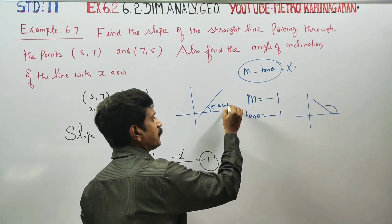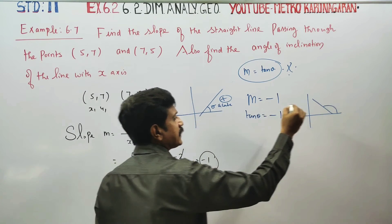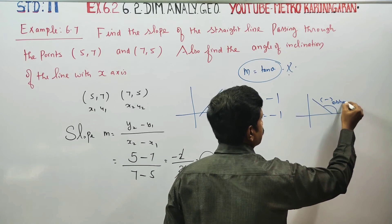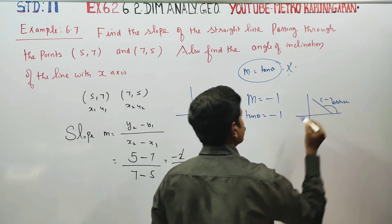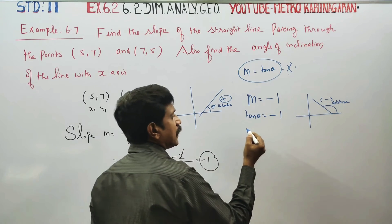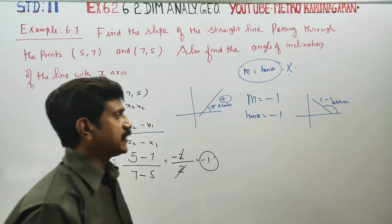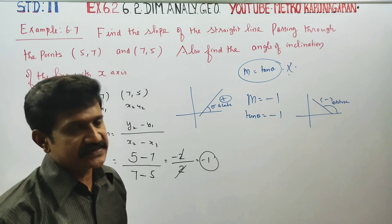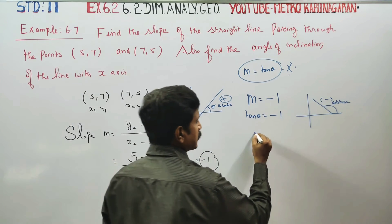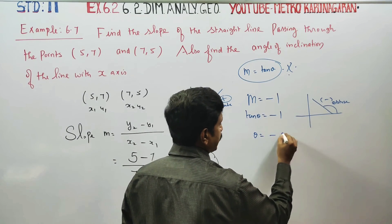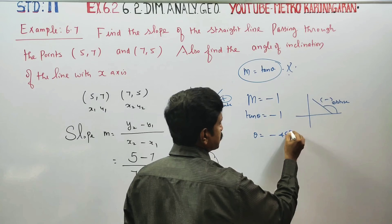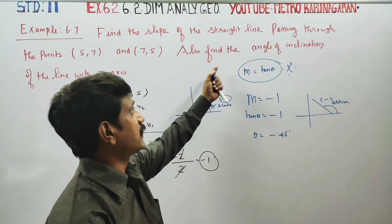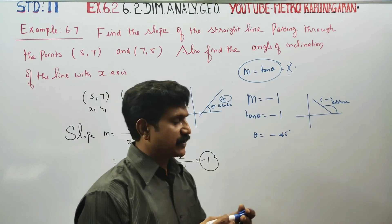Positive slope corresponds to an acute angle, negative slope to an obtuse angle. Tan theta equals tan of 45 degrees, but since the answer is negative, theta is minus 45 degrees. We need to find the angle of inclination.